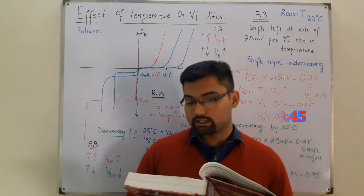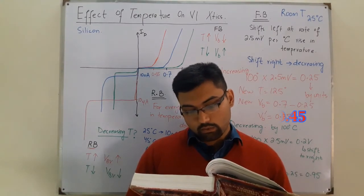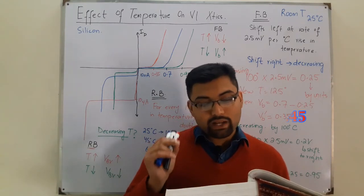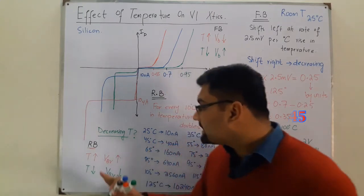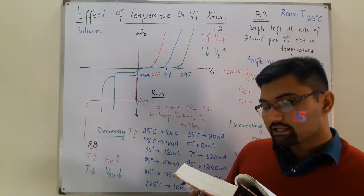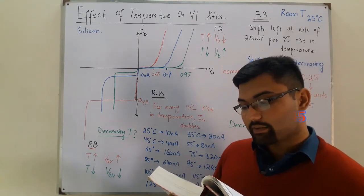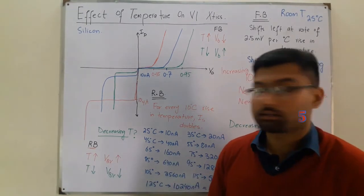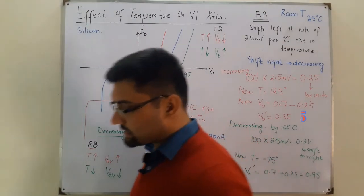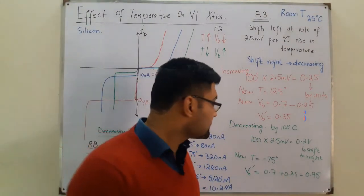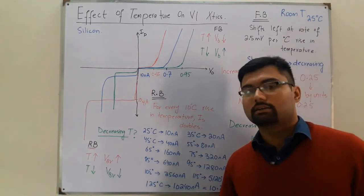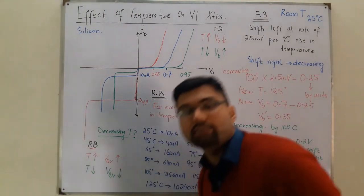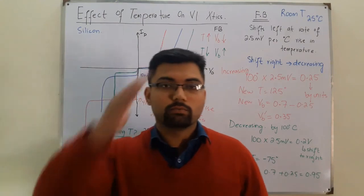It is important to note that the reverse breakdown voltage of a semiconductor diode will increase or decrease with a decrease or increase in temperature. However, if the initial breakdown voltage is less than 5 volts, the breakdown voltage may actually decrease with temperature. This sensitivity is examined in more detail in section 1.15 on the Zener diode. That's all about the effect of temperature on VI characteristics — see you in the next lecture.